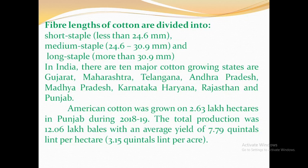In India, there are 10 major cotton-growing states: Gujarat, Maharashtra, Telangana, Andhra Pradesh, Madhya Pradesh, Karnataka, Haryana, Rajasthan, and Punjab. American cotton was grown in 2.63 lakh hectares in Punjab during 2018-19. The total production was 12.06 lakh bales with an average yield of 7.79 quintals per hectare or 3.15 quintals per acre.